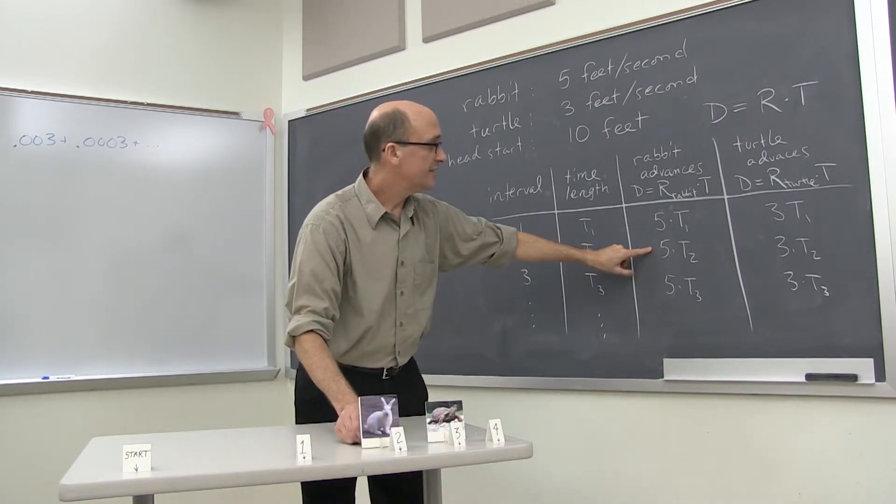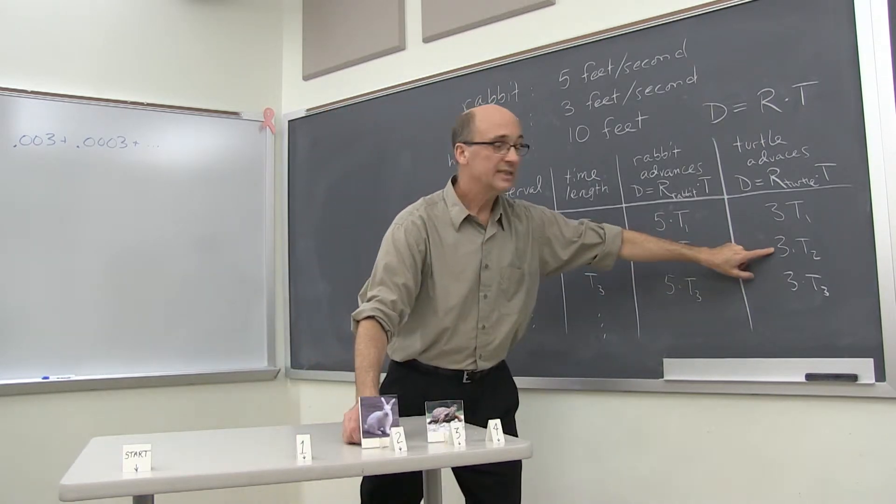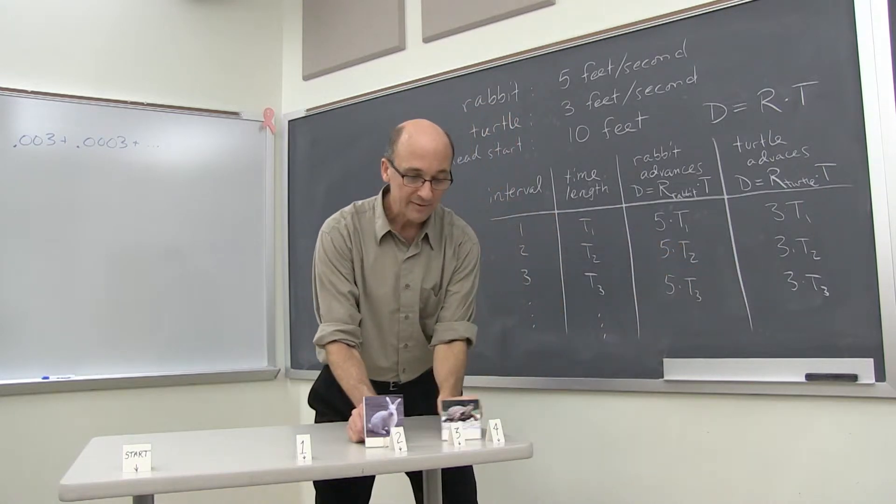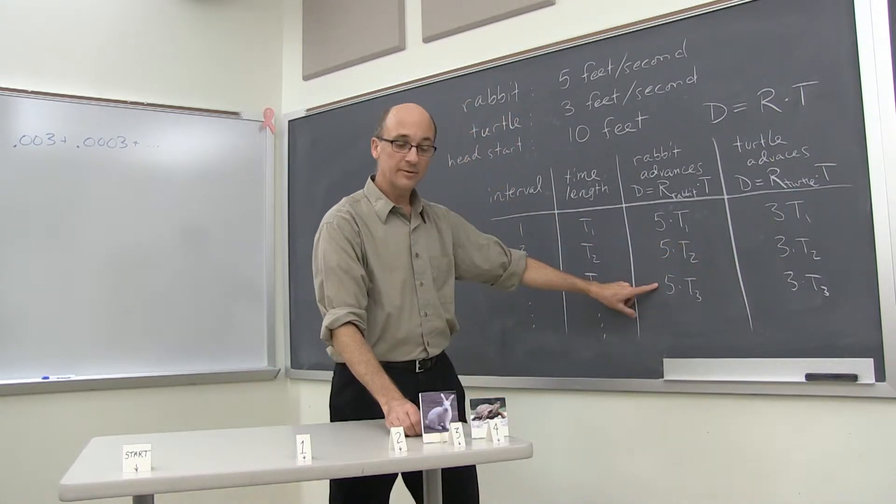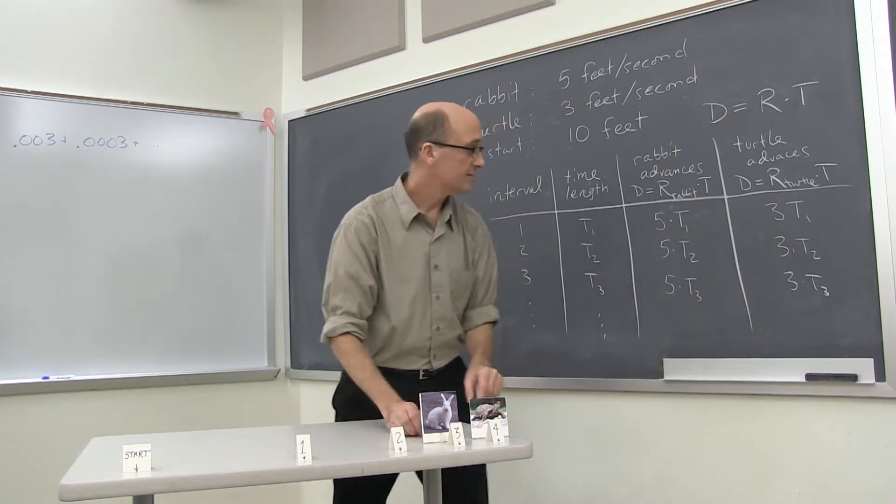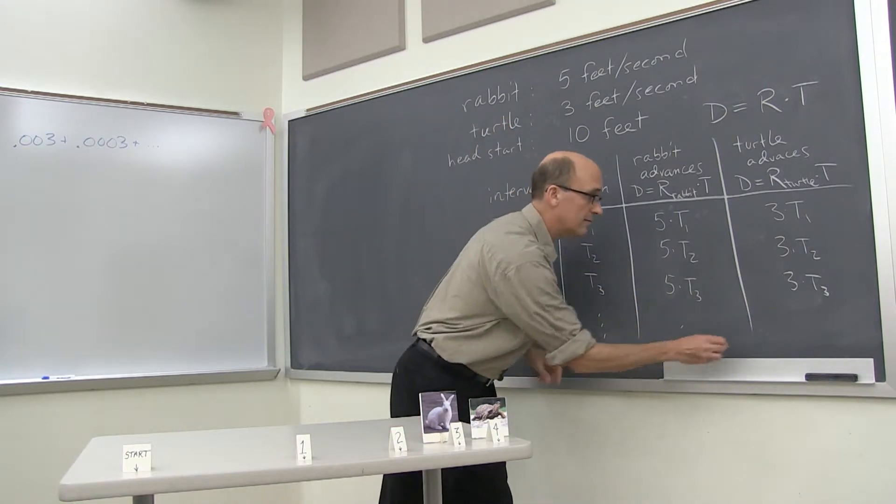And this goes on. Next interval, five times T2 for the rabbit, three T2 for the turtle. Next interval, five T3 for the rabbit, three T3 for the turtle. That goes on forever.